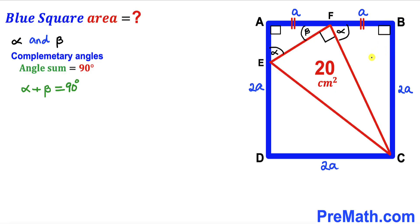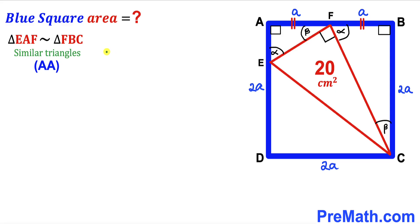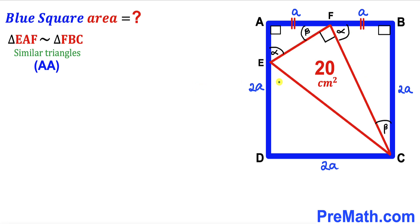Therefore in triangle FBC, this angle must be beta. We conclude that right triangle EAF and right triangle FBC are similar triangles, according to the angle-angle similarity theorem. Since these two triangles are similar, we can set up a proportion.